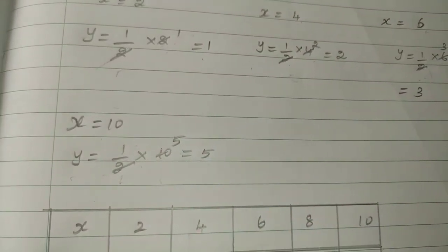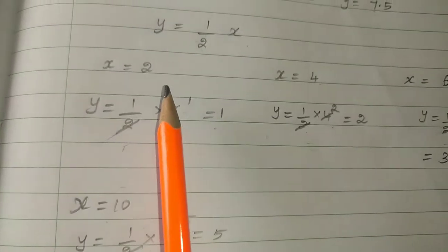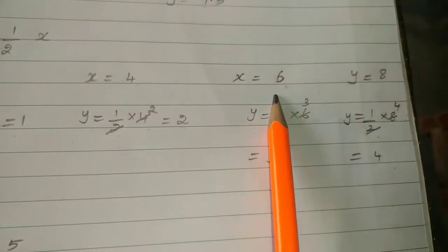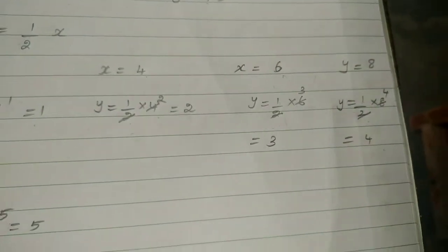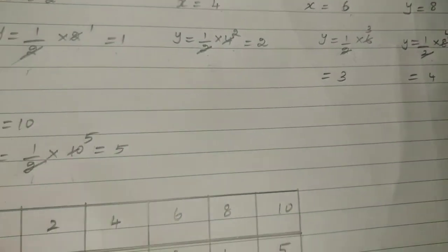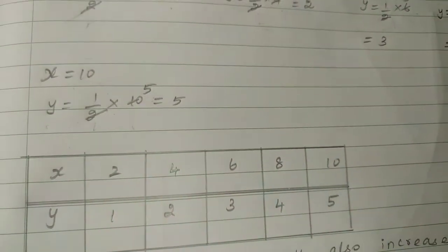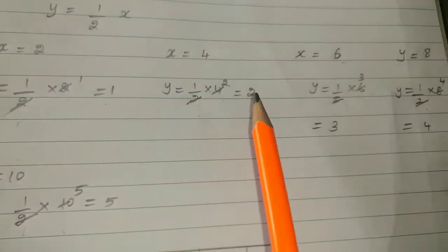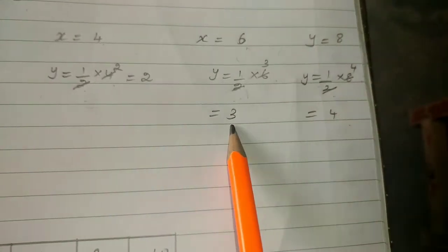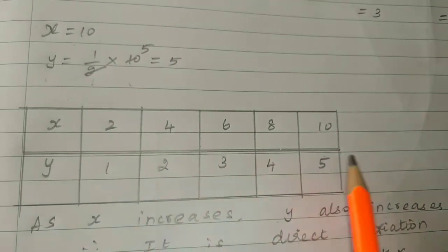So our x and y values are: x equals 2, 4, 6, 8, and 10. The corresponding y values are 1, 2, 3, 4, and 5.